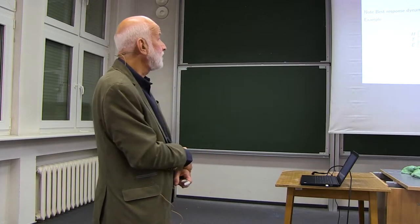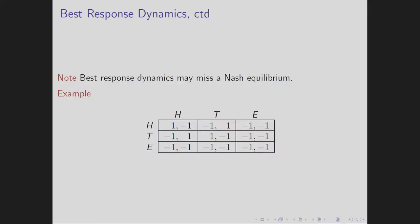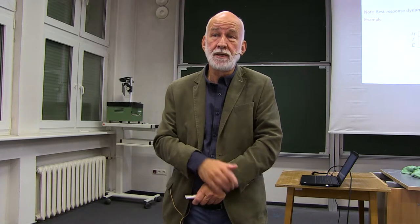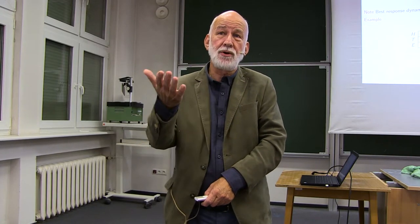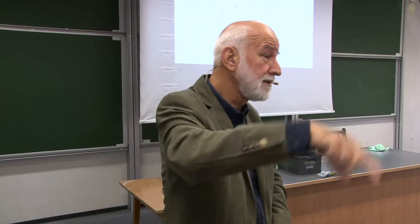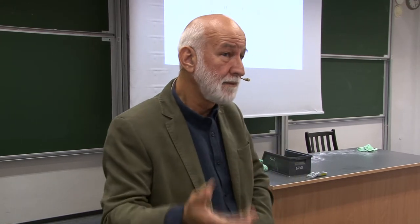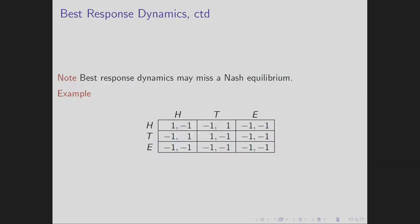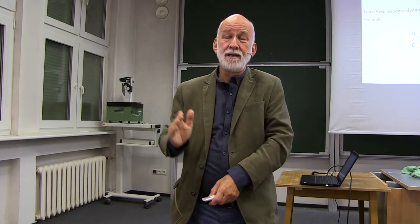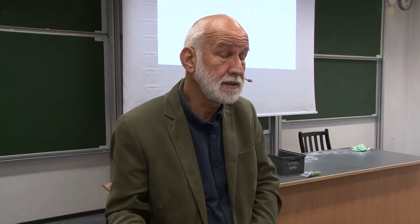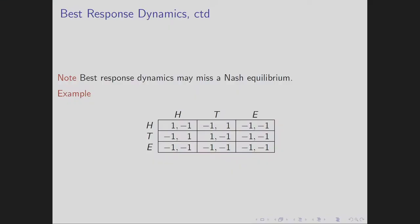First of all, there can be Nash Equilibria which are never reached. Consider the heads-or-tails game — remove the E strategy and you get matching pennies. Now suppose the person who throws the coin occasionally succeeds and the coin lands on the edge. In that case, both players get minus one. This explains this additional row and column. Does this game have a Nash Equilibrium?